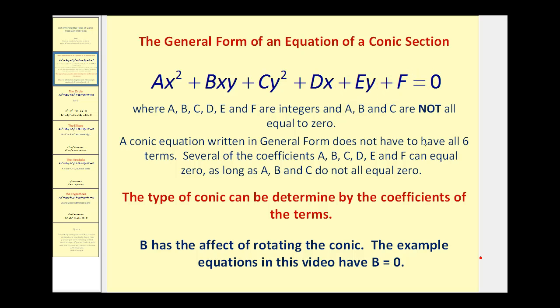A conic section written in general form does not have to have all six terms. Several of the coefficients can equal zero as long as A, B, and C are not all equal to zero. The type of conic can be determined by the coefficients of the terms. A special note for this video: B has the effect of rotating the conic, and example equations in this video have B equal to zero.